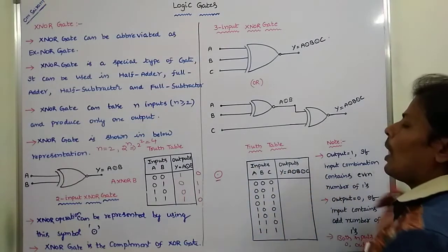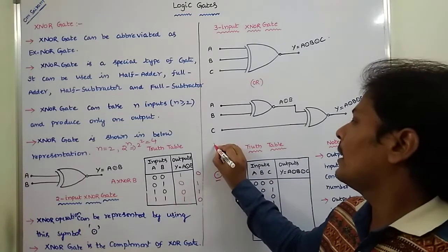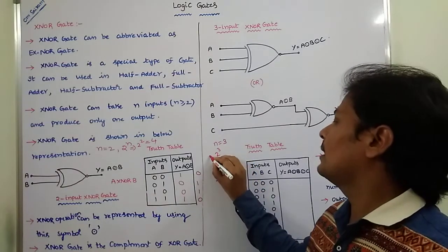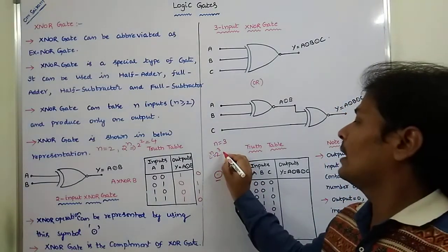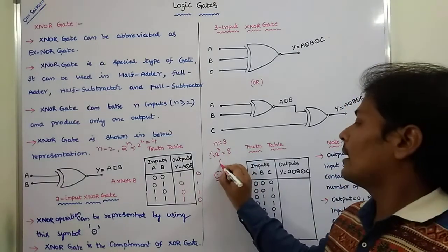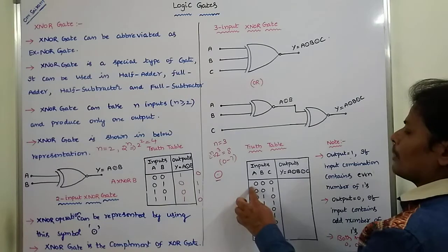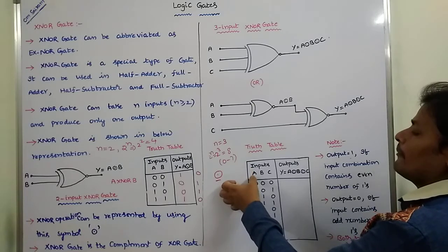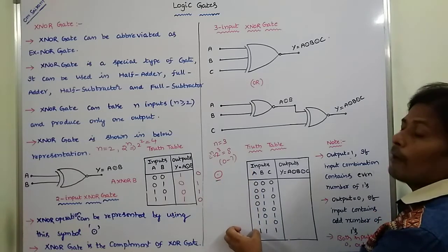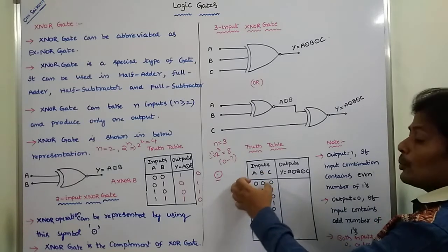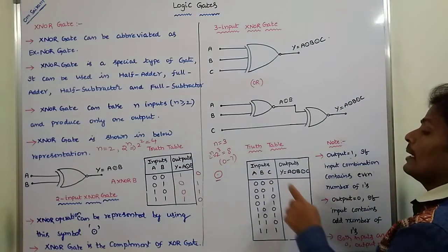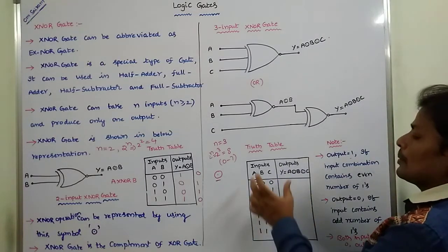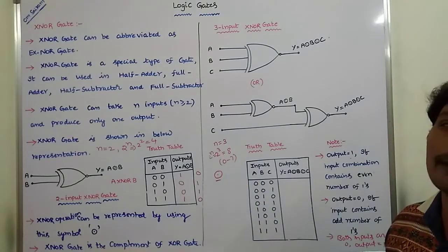This is the truth table for the three-input exclusive NOR gate. With N equal to 3 inputs, there are 2 to the power 3, that is 8, input combinations from 0 to 7. Under the first input variable, we write 4 zeros then 4 ones; under the second, 2 zeros, 2 ones, 2 zeros, 2 ones; under the third, we alternate zeros and ones. This gives us 8 input combinations.